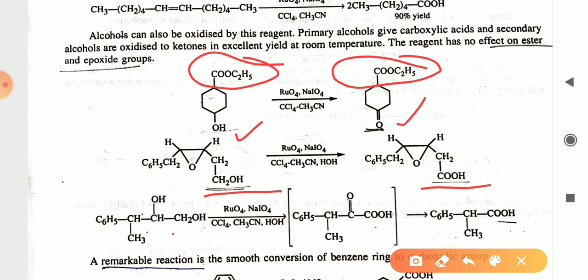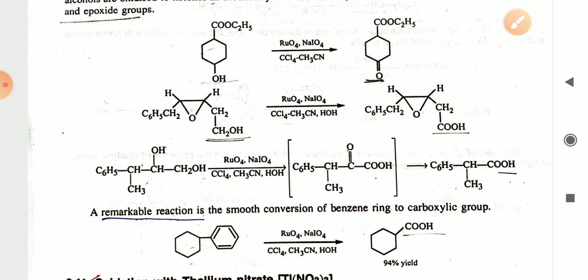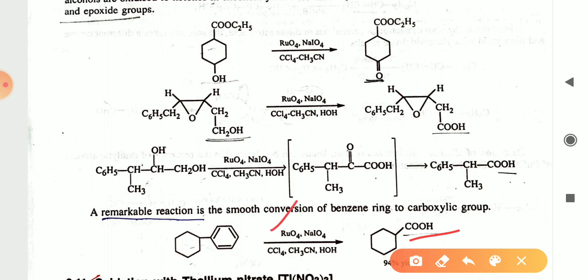The CH2OH group in this molecule, in the presence of ruthenium oxide and NaIO4, gives an intermediate and finally a carbonyl/carboxylic acid product. This kind of reaction is remarkable for the smooth conversion of a benzene ring to a carboxylic acid. Here you can see the benzene ring oxidized to give a COOH group in the presence of ruthenium tetraoxide. Thank you.